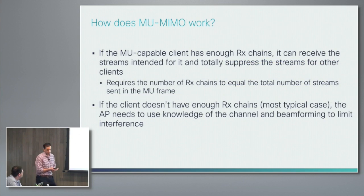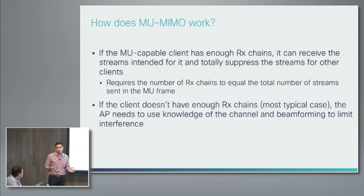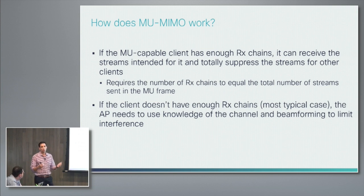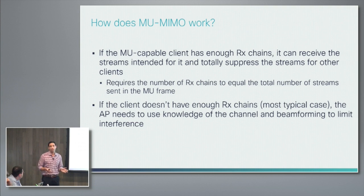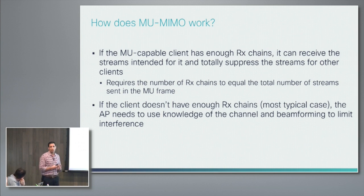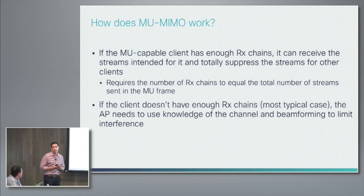So how does it work? There are two parts to the equation. On the receive side, you need a client that's capable of understanding what an MU packet is and has enough receive chains to receive one. There will be spatial streams in that MU packet that aren't intended for it and would otherwise show up as pure interference. So the client needs enough receive chains to suppress that interference while still properly receiving and decoding the spatial stream intended for it.